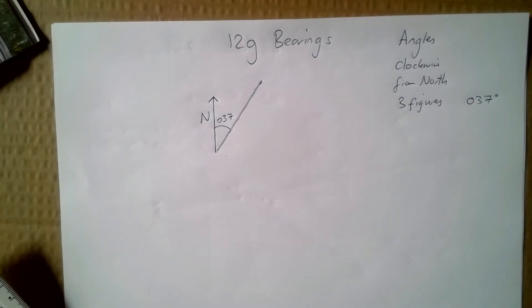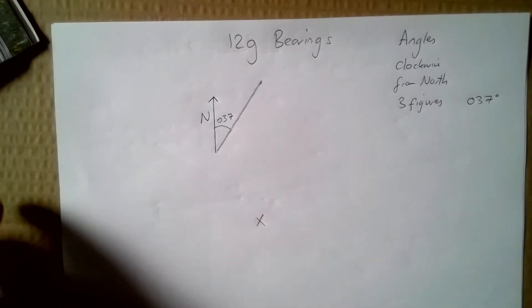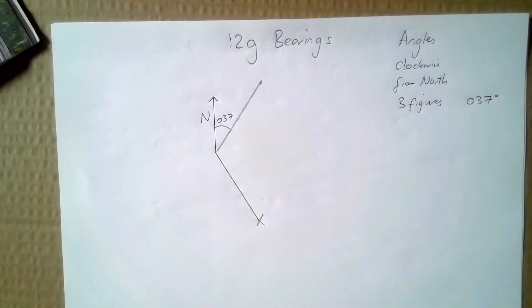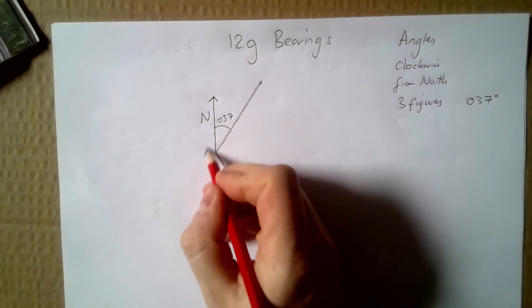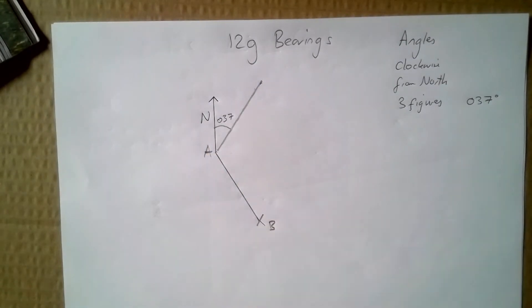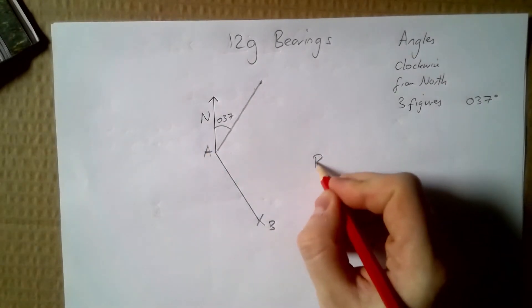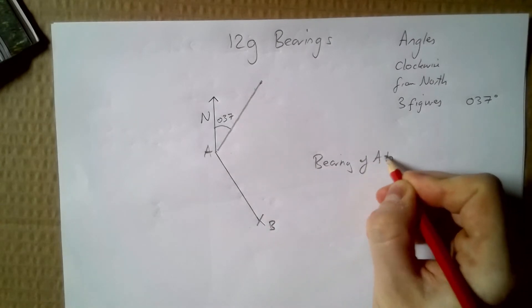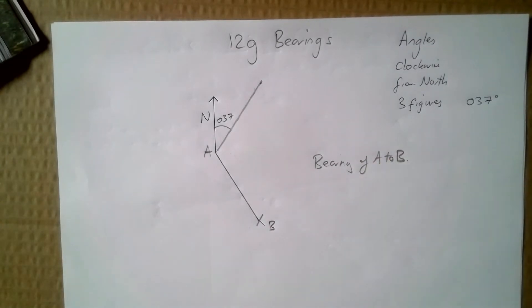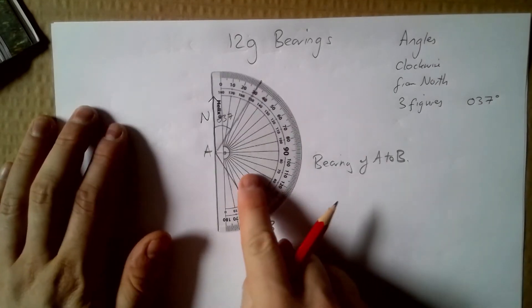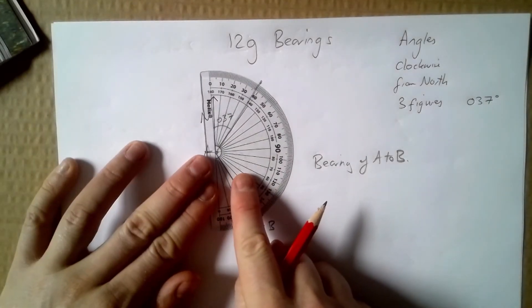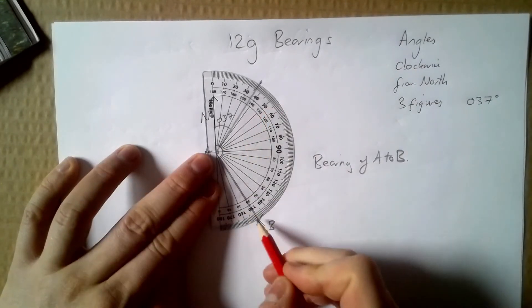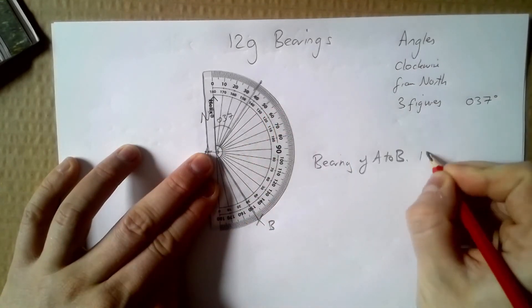If I wanted to take a bearing and work out where it was, for example I've got my point A and I wanted to walk to B, so I'm looking for the bearing of A to B. Then again I'm just measuring an angle clockwise from A to B. So that is 151.